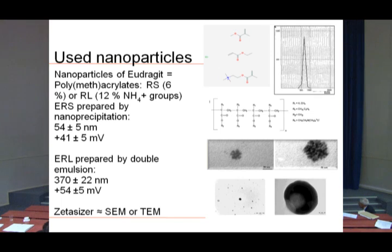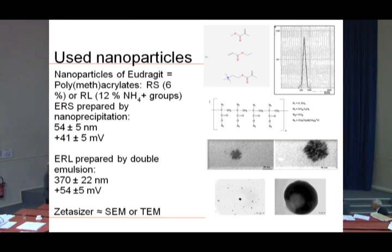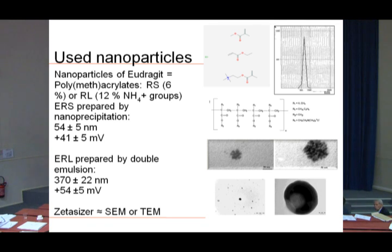The nanoparticles we used are Eudragit poly-methacrylate particles, RS or RL — you will see both. The only difference is the number of quaternary ammonium groups. The RS Eudragit nanoparticles were prepared by nanoprecipitation; the RL by double emulsion. The size is lower with nanoprecipitation and higher with double emulsion, and the zeta potential — the surface potential — is approximately the same. It's a positively charged particle.